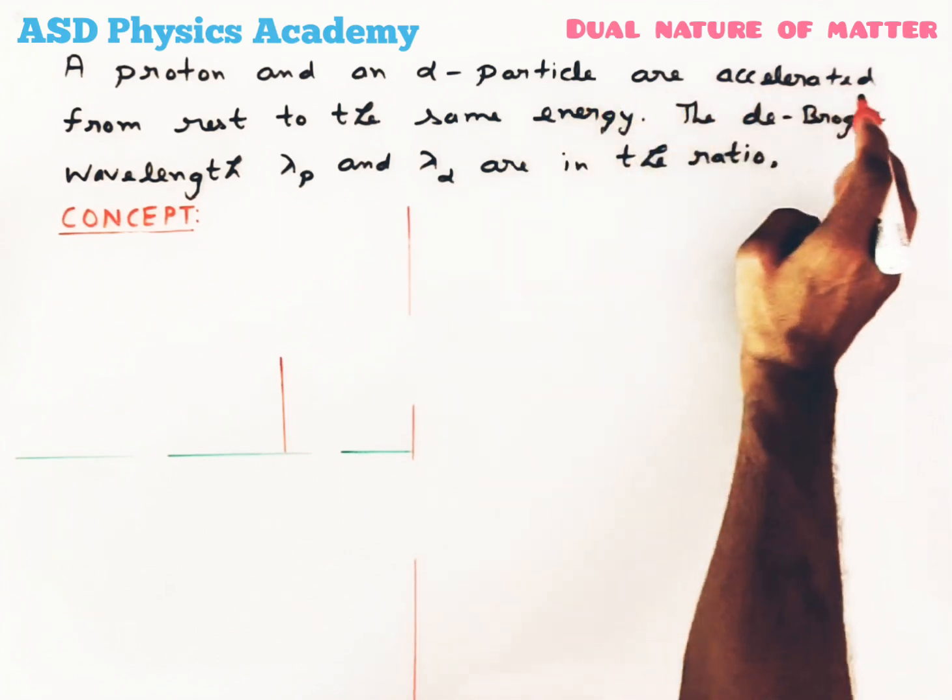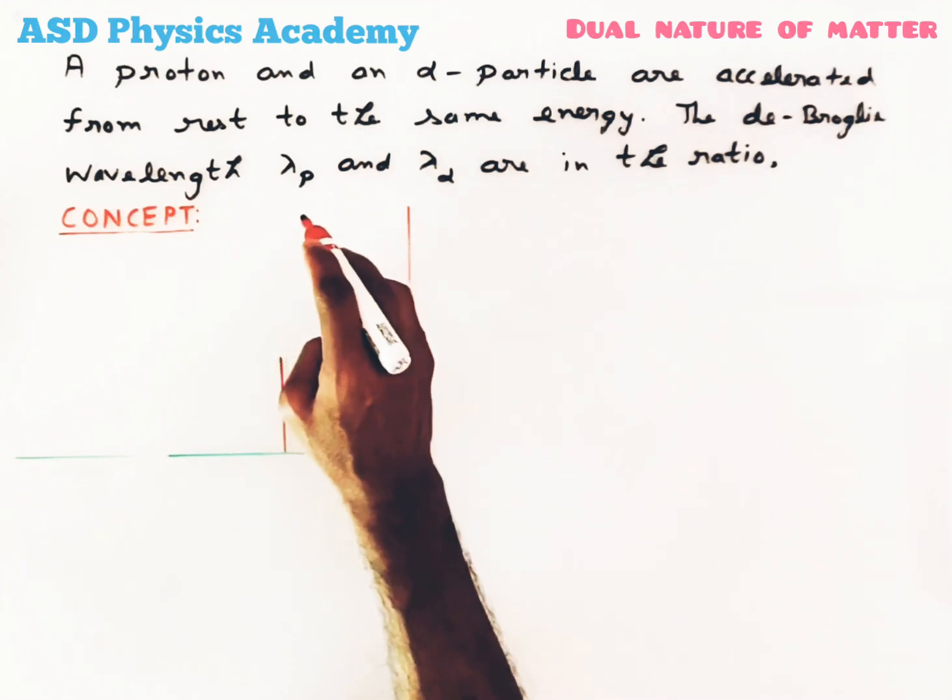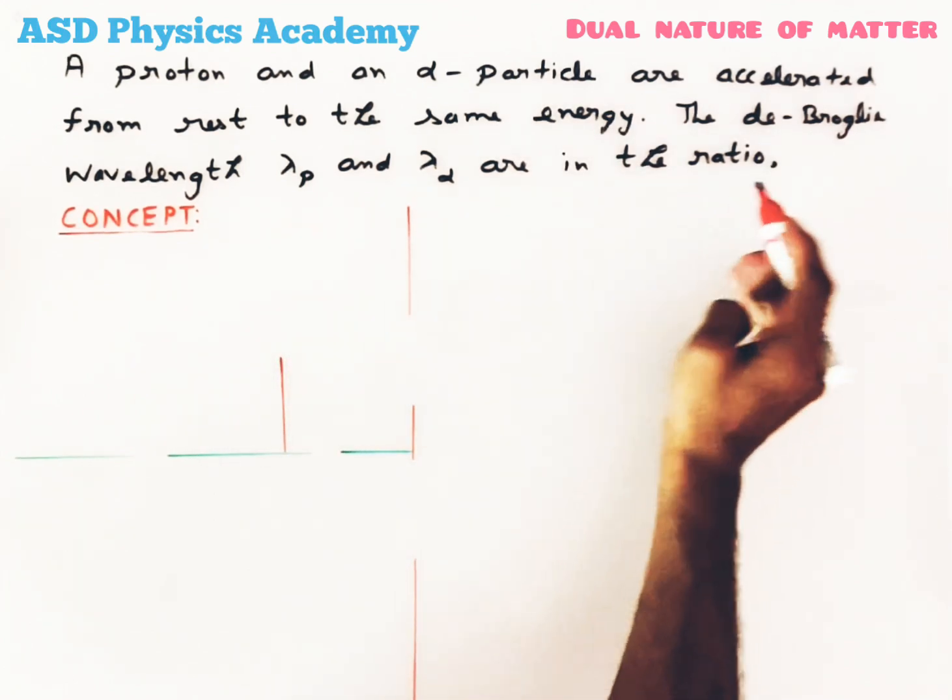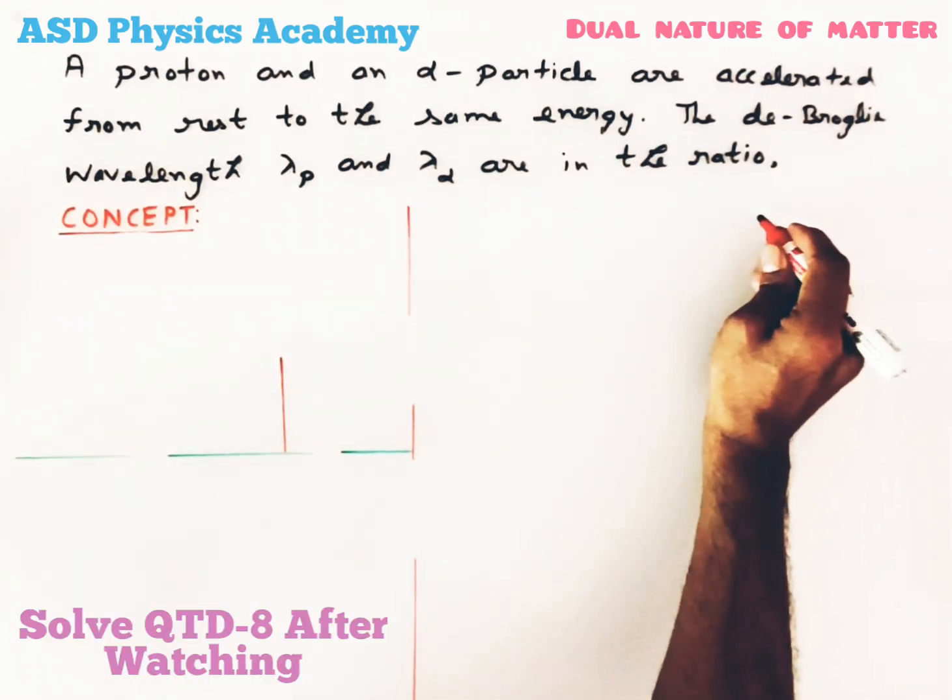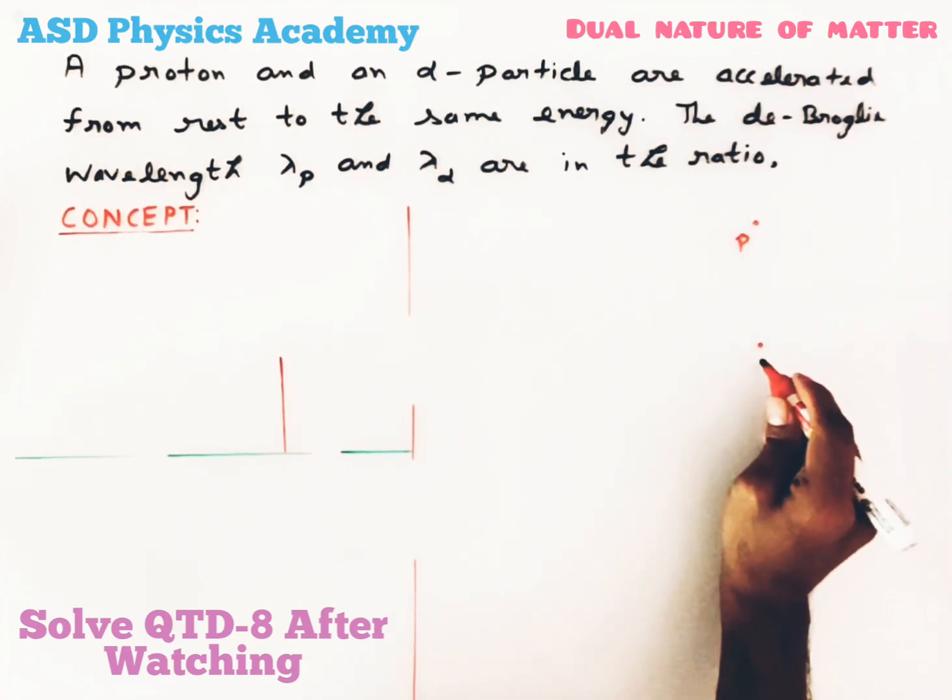Now let's see today's question: a proton and an alpha particle are accelerated from rest to the same energy. The de Broglie wavelengths λp and λα are in the ratio...